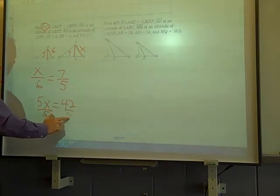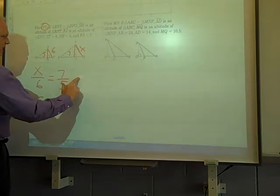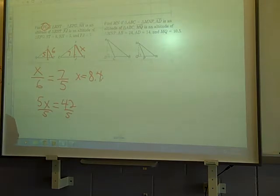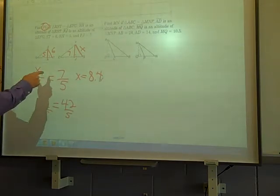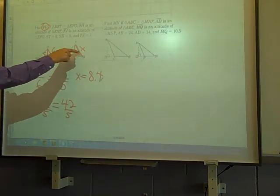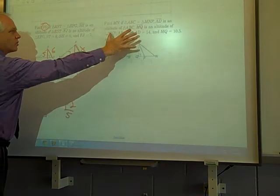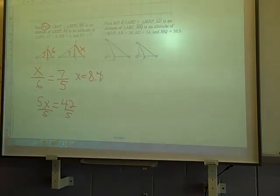When you divide that by 5, you'll get x is equal to 8.4. So x is 8.4. That's not the altitude, that's the FG side that we were after. Once you try this one, we'll talk about the answer in class.